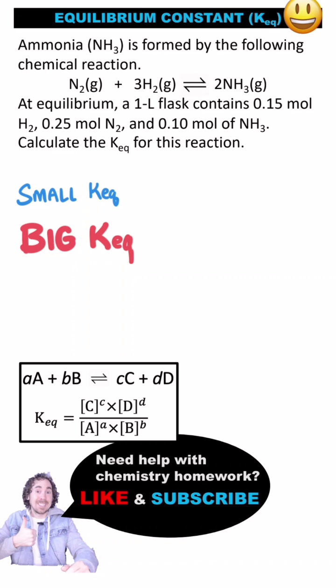The constant will tell us if there's more products or more reactants at equilibrium. A really small KEQ would tell us that there's mostly reactants at equilibrium, while a really big KEQ tells us there's mostly products.